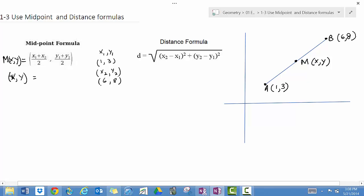If I want to find the distance formula, which is based on the Pythagorean theorem, I subtract x₂ minus x₁. Just substituting straight into the midpoint formula, I get (1 + 6)/2 and (3 + 8)/2, which gives me 7/2 and 11/2.